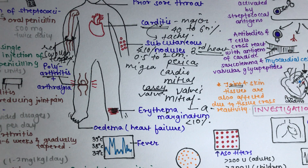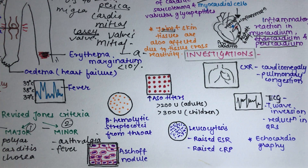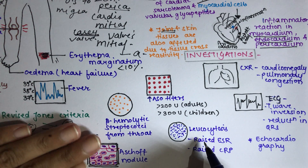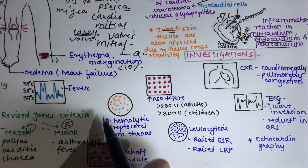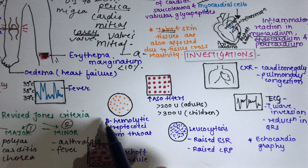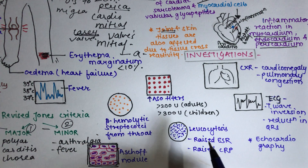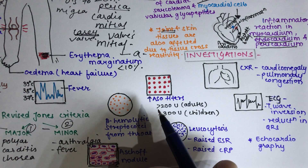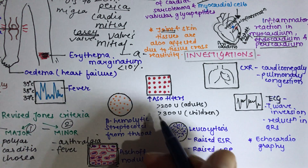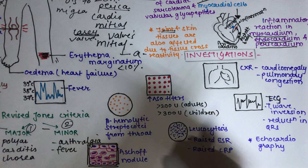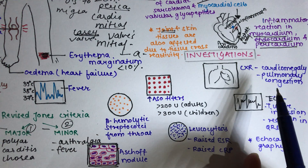Moving to investigations. Blood examination shows leukocytosis, raised ESR, and raised CRP. Throat swab culture is positive for Group A beta-hemolytic streptococci. ASO titers — anti-streptolysin O titers — are elevated: more than 200 units in adults and more than 300 units in children. For carditis specifically, chest X-ray shows cardiomegaly or pulmonary congestion.